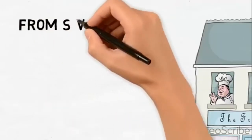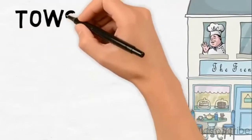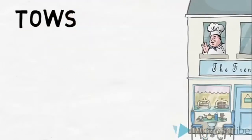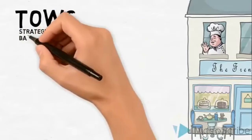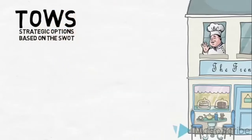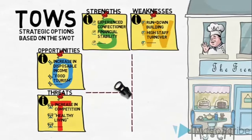Now let us make the move from the SWOT to the TAOS. The purpose of the TAOS is to come up with possible strategic options based on the findings in the SWOT. We start by bringing in the SWOT and placing the four areas like this. Then we create four squares in the middle, which will serve as our framework for creating strategic options.